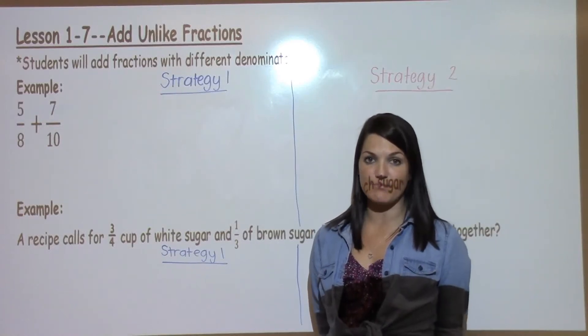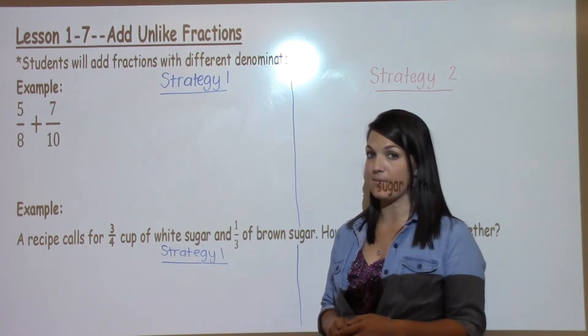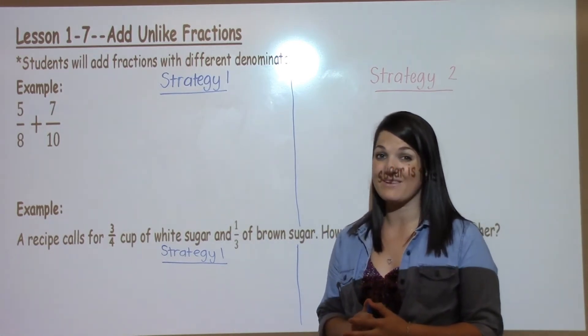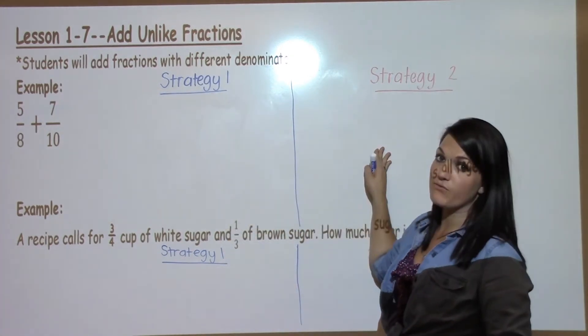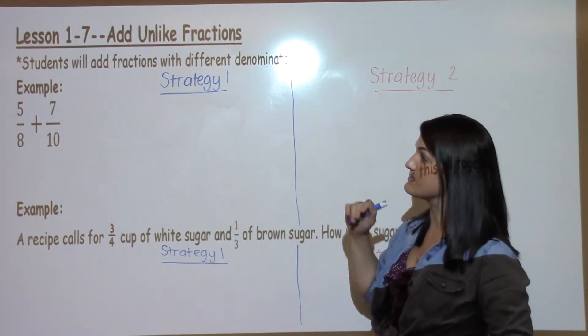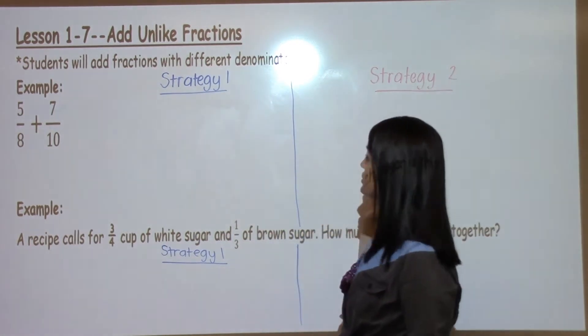Welcome to Lesson 1.7's Math Moment. Today students learned how to add fractions with unlike denominators, which is trickier than adding fractions that have the same denominator. I'm going to show you two different strategies for completing these problems. Strategy one is going to be in blue marker and strategy two will be in red.